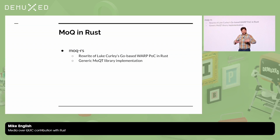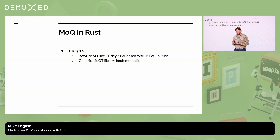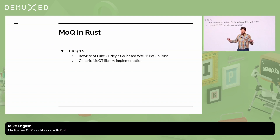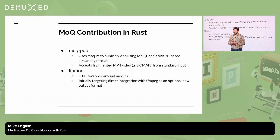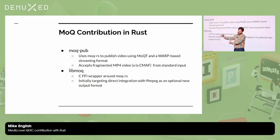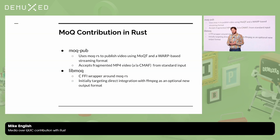I wanted to do Media over QUIC in Rust. Around the time I was starting the project, I learned that Luke Curley — one of the main authors of the draft — was converting his Warp proof of concept from Go into Rust and updating it to work with Media over QUIC, the latest version of the spec. So I joined him. Specifically, I worked on MoQ pub, a command-line tool to publish video using MoQ transport. It takes fragmented MP4 from standard input and puts it on the wire using the MoQ transport protocol and a Warp-based streaming format with GOP-at-a-time delivery. I also extended that to something called libmock, a C FFI wrapper around MoQ RS targeting first integration with FFmpeg.